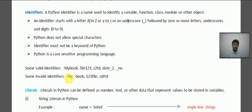First one is My Book. Here as you can see, space is there, so spaces are not allowed in the identifier. The next one, 123file, means starting with digit is not allowed. The last one is @ symbol, so special characters are not allowed in the identifiers, so you can't use them.